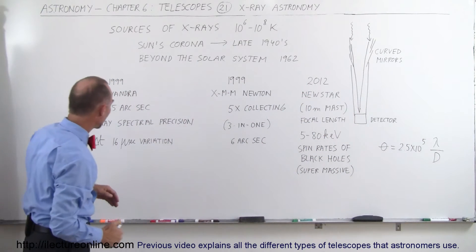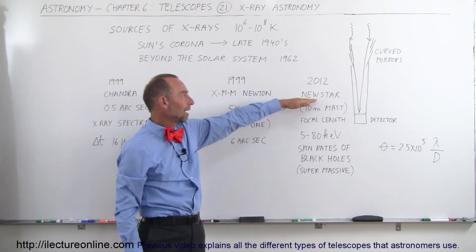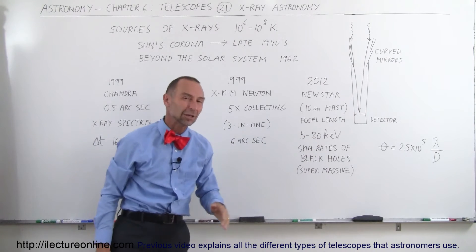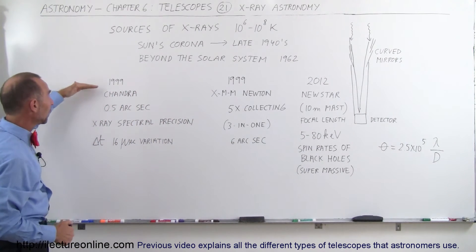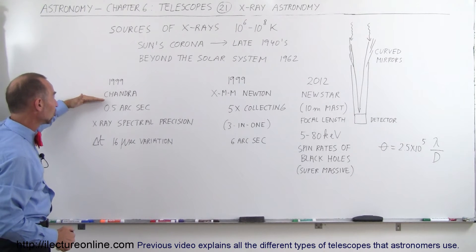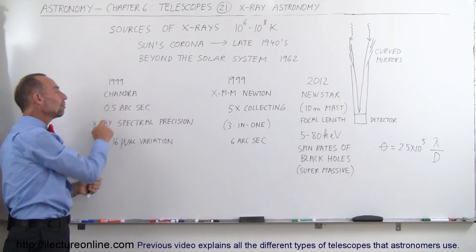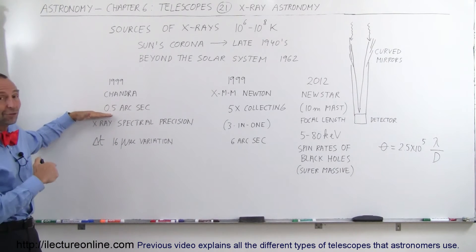Again, the X-rays will come in at very high energies. The best telescope that we have up there now called NuSTAR that was launched in 2012 can collect energies from 5 to 80 kilo electron volts, which is pretty energetic. But the first ones that were put up, like in 1999, the Chandra Observatory, as we call it, had a resolution of 0.5 arc seconds, which is absolutely amazing. Our urban telescopes can't even do that well.